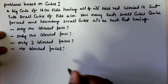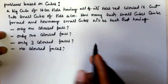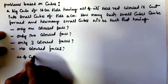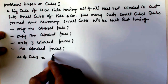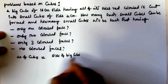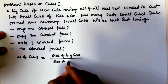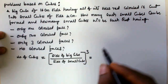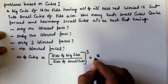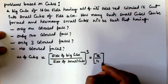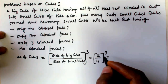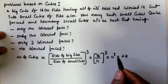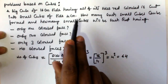So how many small cubes can be formed? In the previous video I told you the formula: the number of cubes formed is equal to the side of the big cube divided by the side of the small cube, to the power of 3. So that is 16 divided by 4, to the power of 3 — that's 4 cubed, which equals 64. So a total of 64 cubes can be formed.